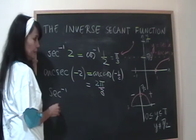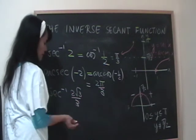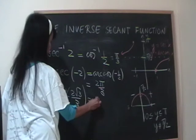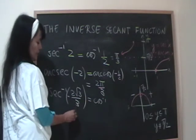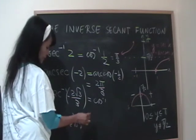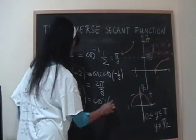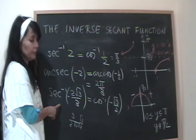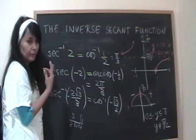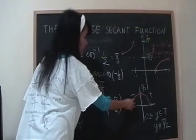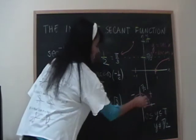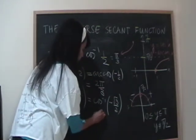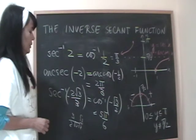For secant inverse of negative 2√3/3: take the reciprocal to get cosine inverse of negative √3/2. Without the negative, cosine inverse of √3/2 gives π/6. Since the argument is negative, we want the multiple of π/6 in the second quadrant. That's π minus π/6, which equals 5π/6. Choosing the same range as arc cosine makes these conversions straightforward.